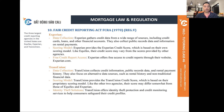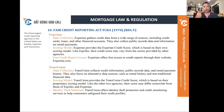Experian offers free access to credit reports through their website. You can run one credit report per year for all three agencies for free. If you want to pay, you can run it every three months — it costs about $39. TransUnion collects credit information, public record data, and rental payment history. They also focus on alternative data sources such as rental history and non-traditional financial data — for instance, if you borrow money from a private lender and that lender puts a lien on your property, TransUnion can pull that from public records and factor it into their scoring model.